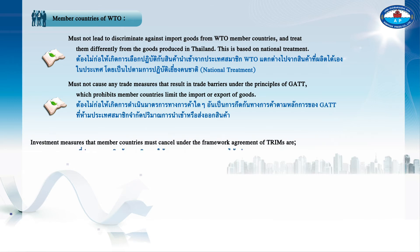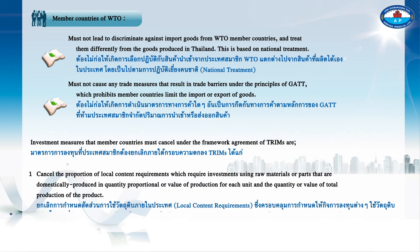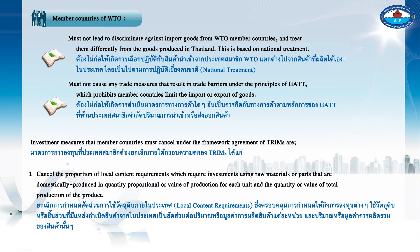Investment measures that member countries must cancel under the TRIMs framework agreement include: 1. Cancelling the proportion of local content requirements, which require investments to use raw materials or parts that are domestically produced in a quantity or value proportional to production for each unit and the total quantity or value of production of the product.